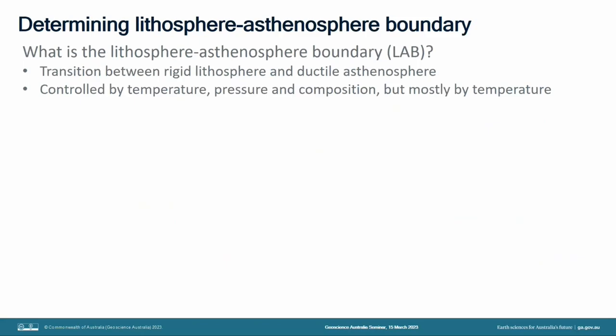Another thing I'm going to be talking about is the lithospheric-asthenospheric boundary — I'm going to call it the LAB from now on, because lithospheric-asthenospheric boundary is quite a mouthful. The LAB is a transition between the rigid lithosphere and the ductile asthenosphere — basically when it becomes a bit squishy way down below us. It's controlled by temperature, pressure and composition, but mostly by temperature.